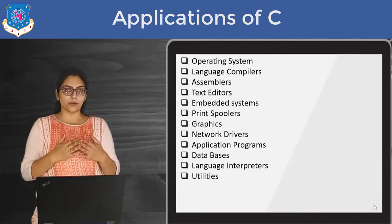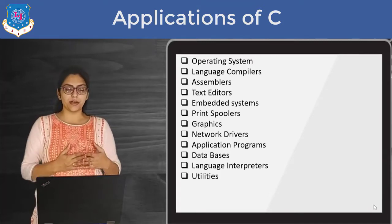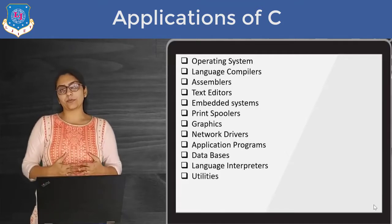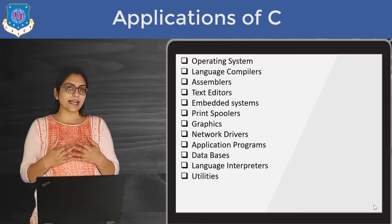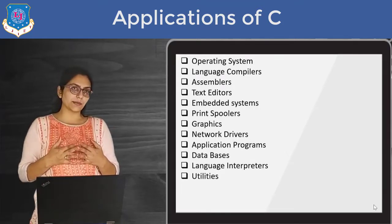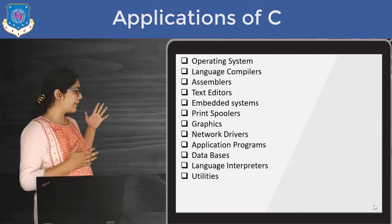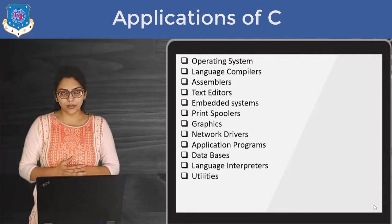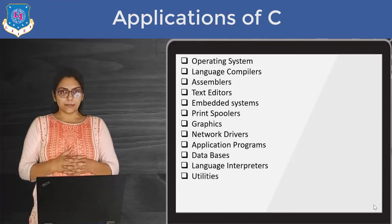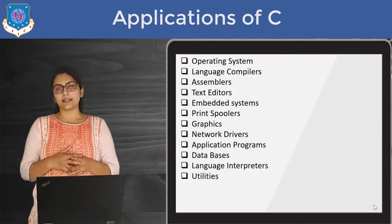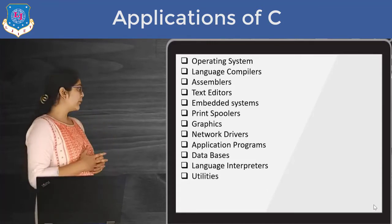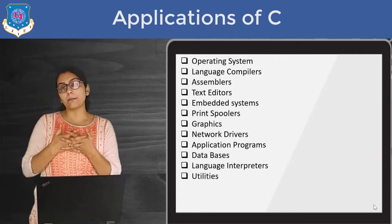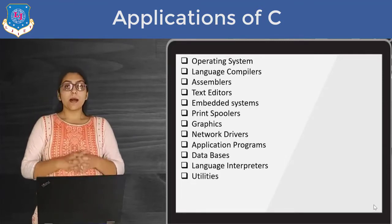I have already covered the part of system softwares, which is basically used to support the system. What are the examples of system softwares? As you can see, some of them are already mentioned in this list: operating system, assemblers, compilers, etc. C programming language can also be used to make a compiler, a language compiler.